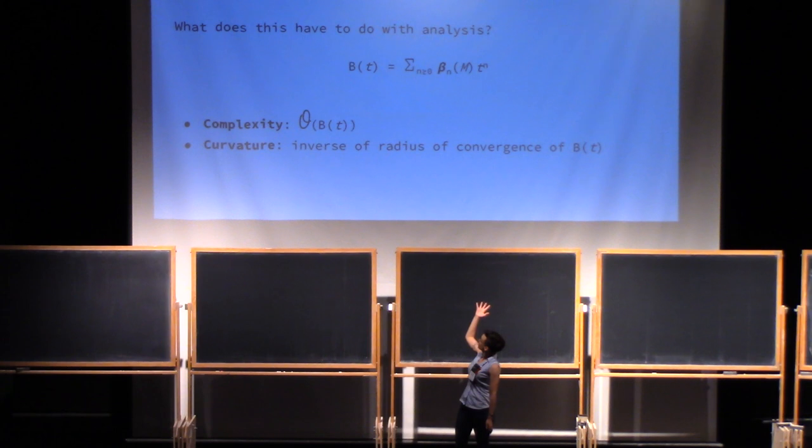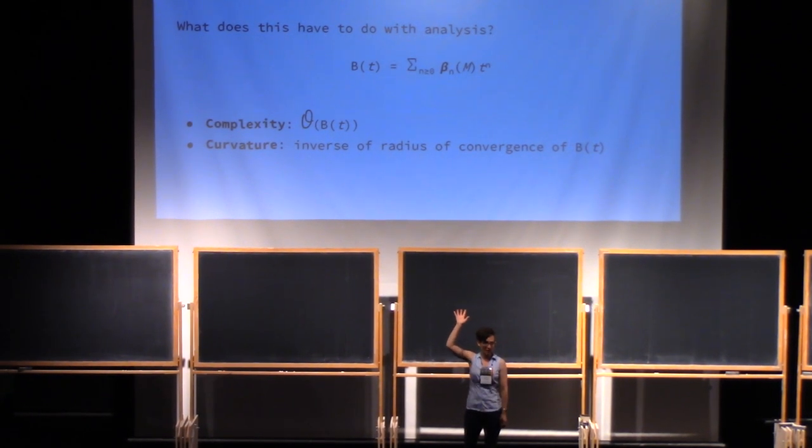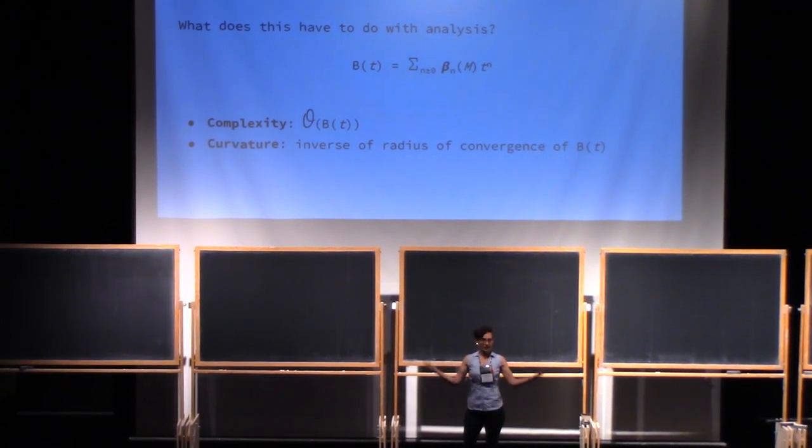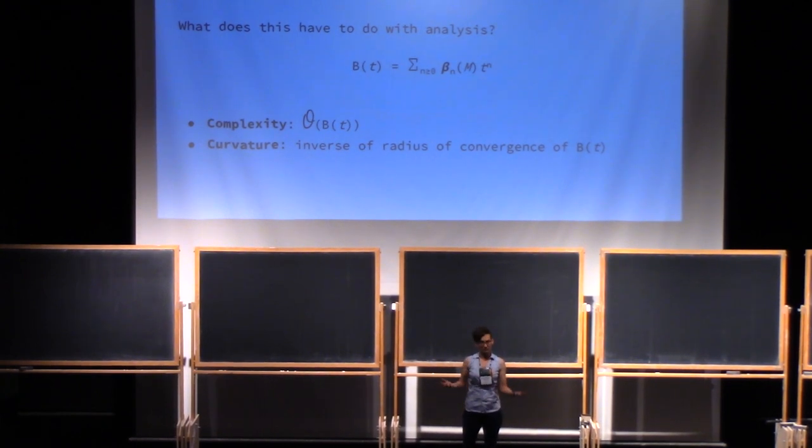So let me convince you that you might want to look at Betti numbers from an analytic point of view. We can take the Betti numbers, throw them on as coefficients to this formal power series, and then start measuring things like curvature or complexity to get answers to those asymptotic questions about Betti numbers, like how do free resolutions grow? Do they stop? Are they finite? Are they periodic?